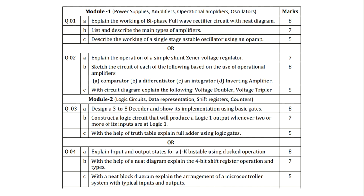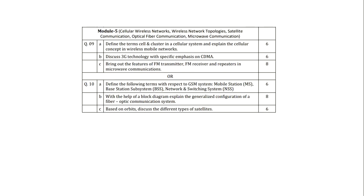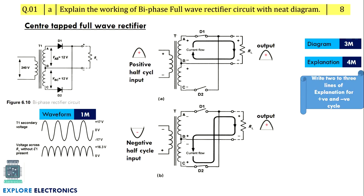So model question paper 2 will be like this. Let us go one by one and see the solution. The first question is on module 1: explain the working of biphase full wave rectifier circuit with neat diagram. For the biphase full wave rectifier, another way of asking the same question is as a center-tapped full wave rectifier.